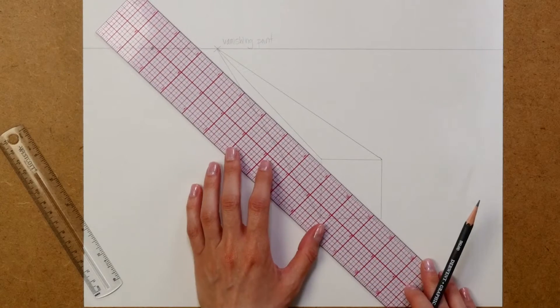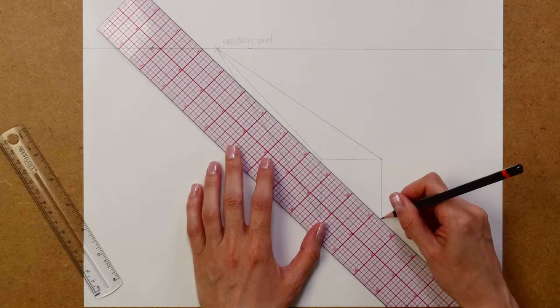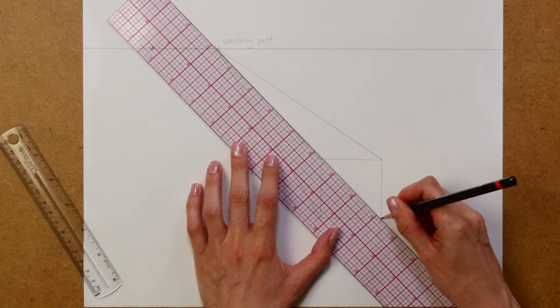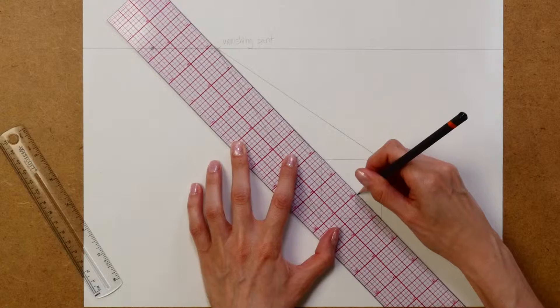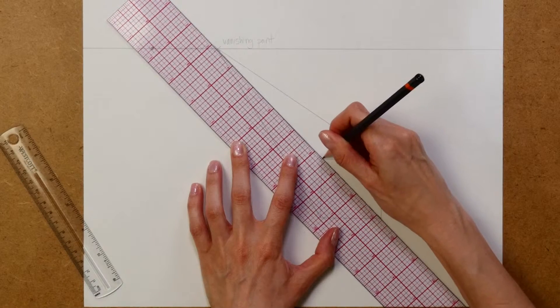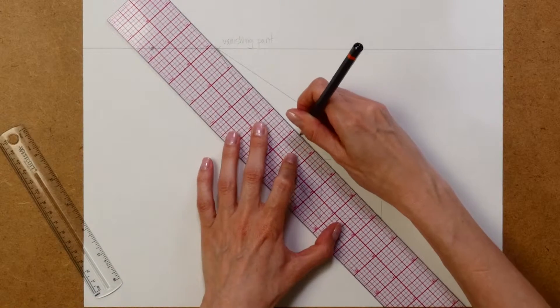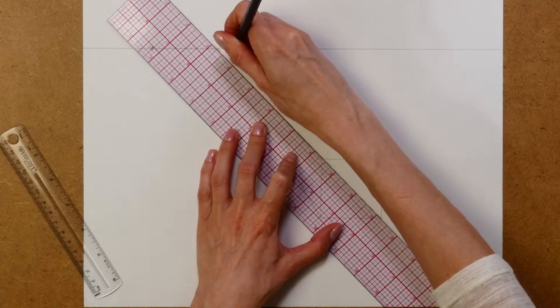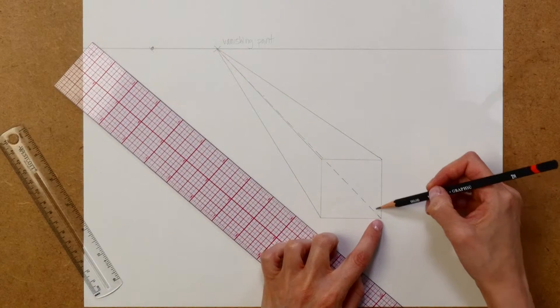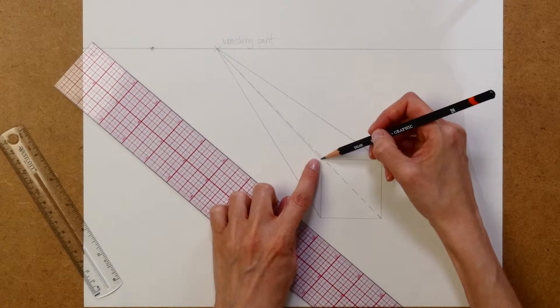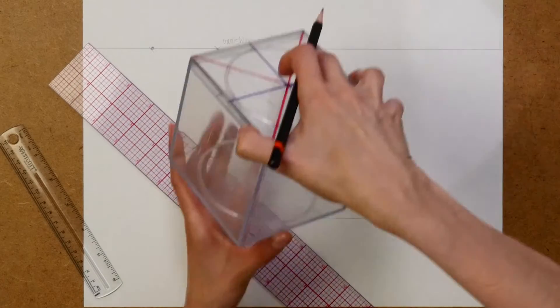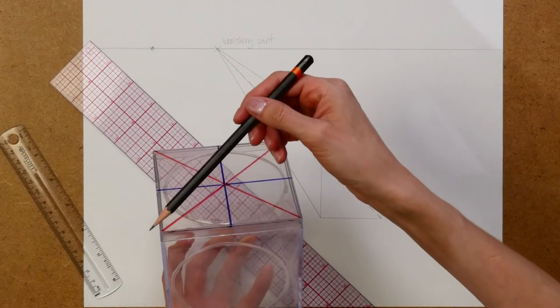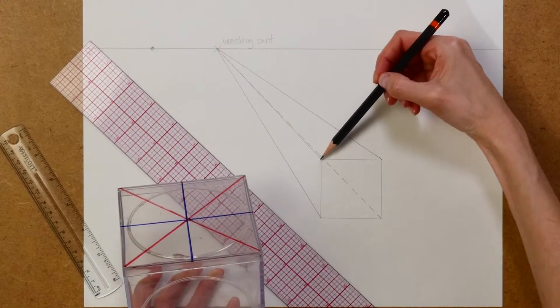Instead, to make it a transparent cube, I'm going to put in this fourth line. To show that it's transparent, I'll do this as a dashed line so you'll see it's behind the other lines. Now, coincidentally, two of my lines are lining up here. You can see this bottom line is almost in line with this top corner line. Those are different lines though. This is the dashed line, and this is the top line.